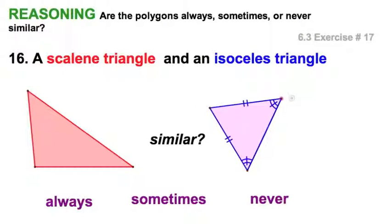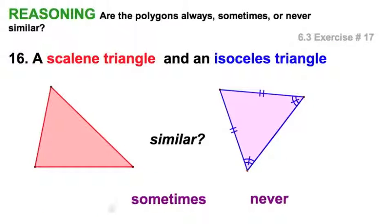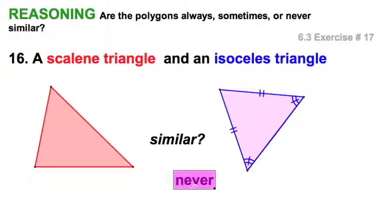So when I look at this figure, it doesn't matter how I arrange it, I'm not allowed to make this one have two congruent sides, or it wouldn't be scalene. So, well, the always is out of there. You know, I can't see this sometimes either. This one is going to have to be never similar.